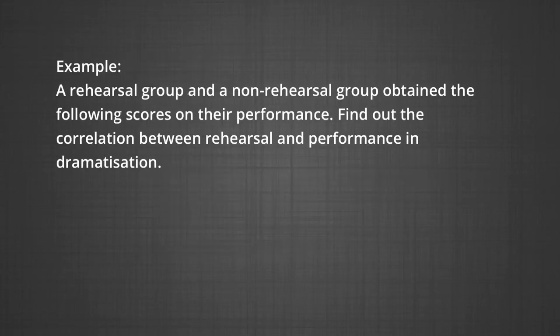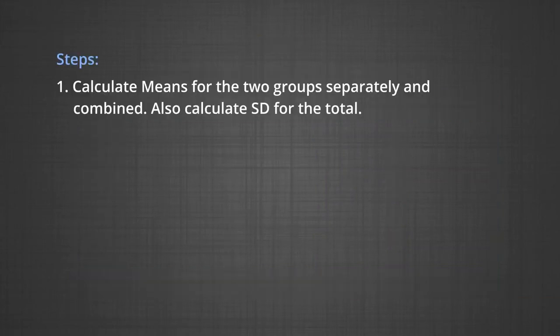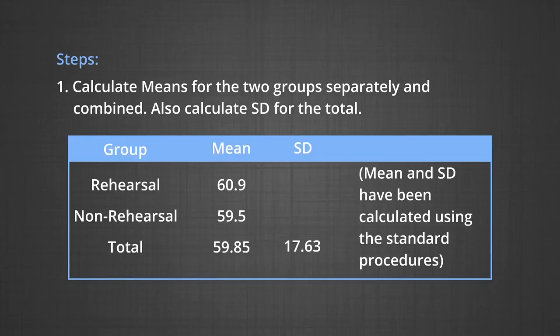Here's an example: A rehearsal group and a non-rehearsal group obtained the following scores on their performance. Find out the correlation between rehearsal and performance in dramatization. Table 1 shows the worksheet for calculation of R biserial. Column 1 shows the scores, column 2 shows frequencies of the rehearsal group, and column 3 shows frequencies of the non-rehearsal group.